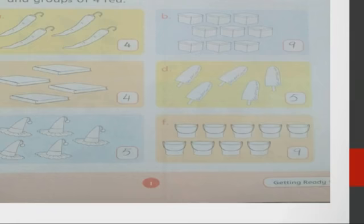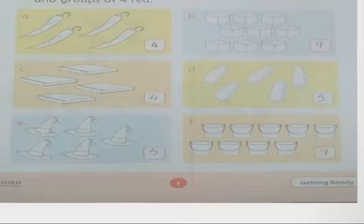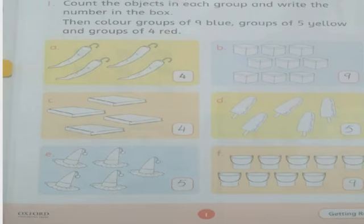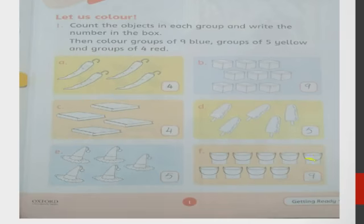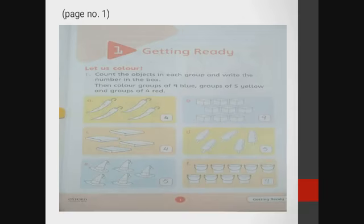Now we will move to part F. First count these buckets: one, two, three, four, five, six, seven, eight, and nine. First we will write nine in the block, and then we will color it. Groups of nine — we will color blue. We will color the buckets blue.